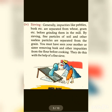The fourth method is sieving. Generally, impurities like pebbles, husk, and extra particles are separated from wheat grain before grinding them. Fine particles of soil and other unwanted particles are separated from the grain by sieving. You must have seen your mother or sister removing husk and other impurities from flour before cooking, done with the help of a fine sieve.